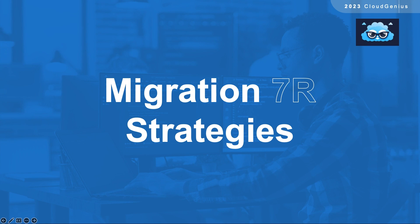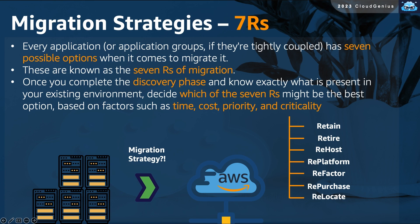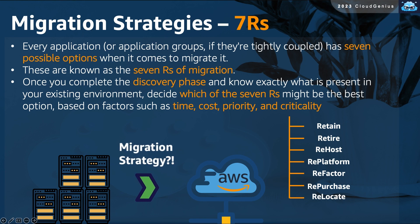Let's start discussing the 7R of migration strategies. For every discovered application in the customer's current environment, we need to select one of seven migration strategies. The selection criteria would be dependent on factors such as cost, time, and priority. Let's explore each one of them separately.